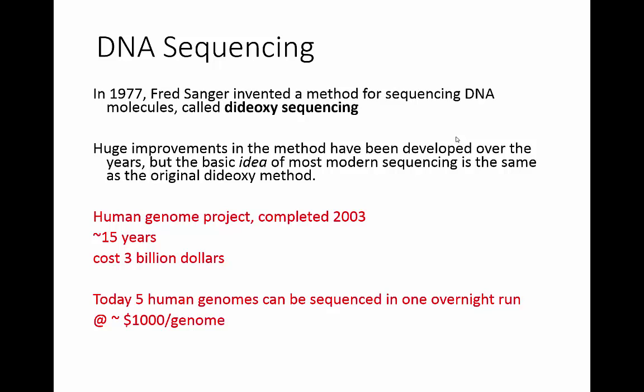DNA sequencing is the technique that tells us the order of bases on chromosomes — whether bacterial, human, or any species you want. This method was invented in 1977 by Fred Sanger, and it has been immensely important. He invented a technique called dideoxy sequencing, and this is essentially the same idea still used today, though there have been huge improvements in the scale at which sequencing can be done.